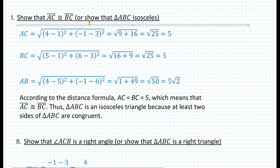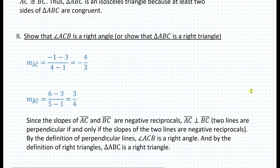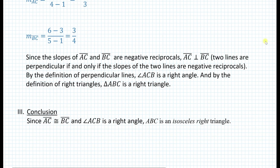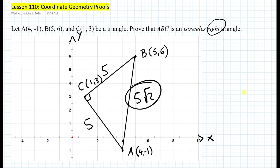Looking at the proof now: statement one showed that triangle ABC is isosceles, and statement two showed that triangle ABC is a right triangle. When you do a coordinate geometry proof, don't forget to include a conclusion — that's something they look for on the Regents exam in geometry. Here's the conclusion: since segment AC is congruent to segment BC and angle ACB is a right angle, then triangle ABC is an isosceles right triangle.